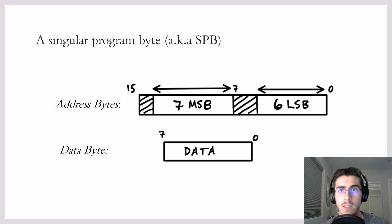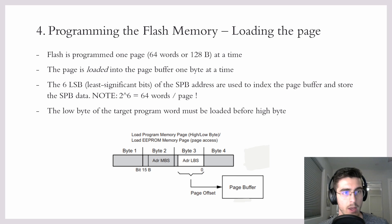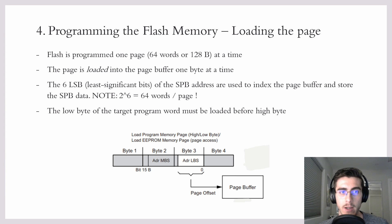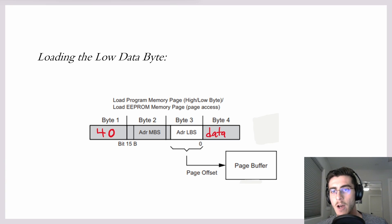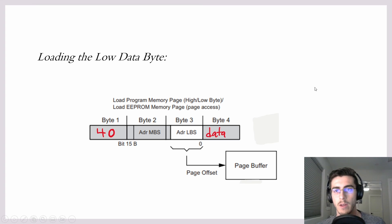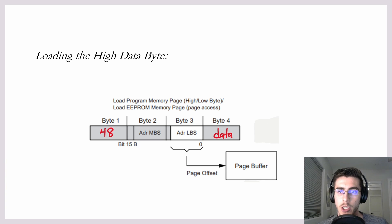With this in mind, let's continue on to step 4 of the algorithm. Step 4 is to load the program byte by byte into the page buffer. The algorithm requires that the low byte of the target program is loaded before the high data byte. Here is an example of the load program instruction for the low data byte: the opcode is 0x40, followed by the address of the data byte, then the data itself. Similarly, there is a corresponding instruction for loading the high data byte, where the only difference is we use 0x48 in the first byte of the instruction.